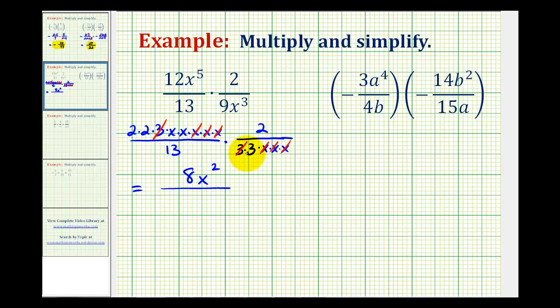And the denominator would be 13 times 3, which is equal to 39. This would be our product.